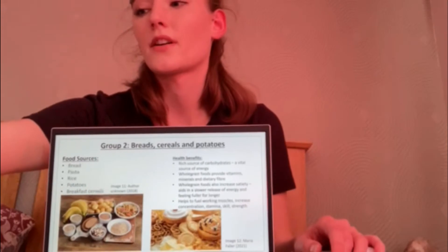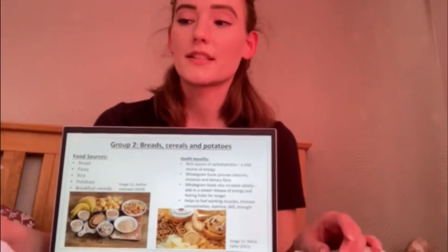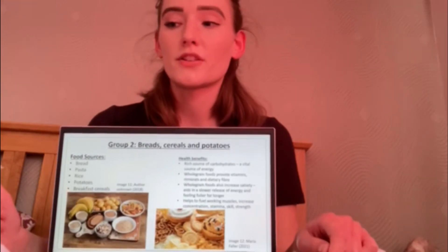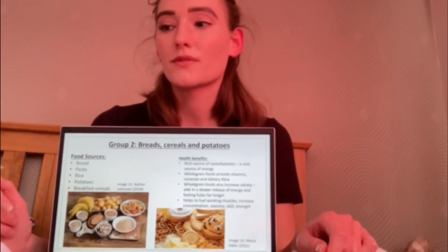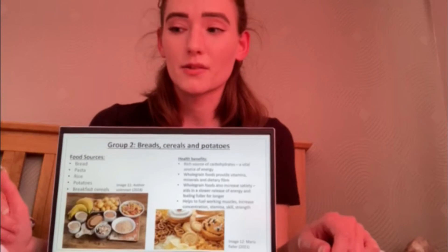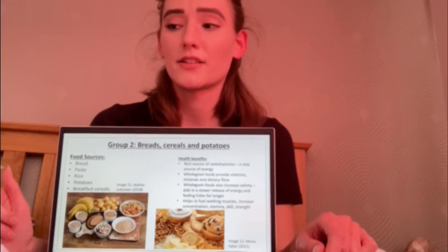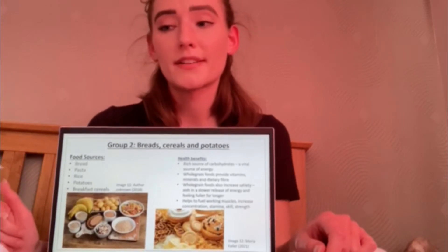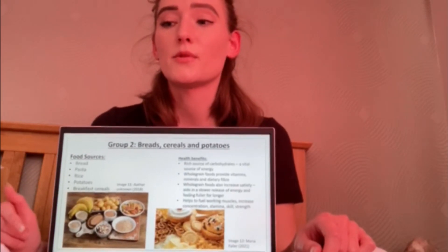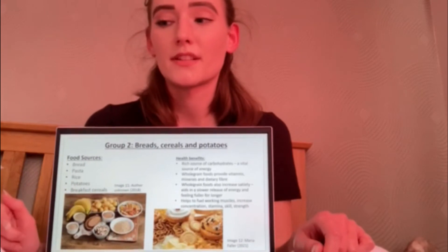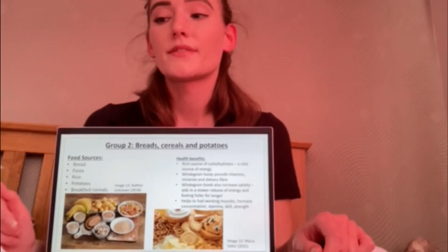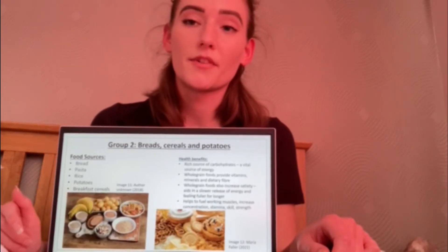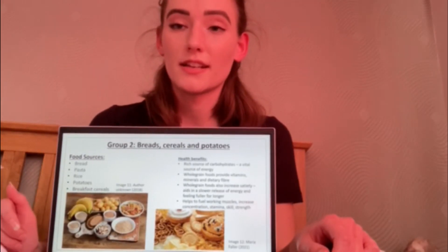In group two we have carbohydrates, which can consist of bread, pasta, rice, potatoes and breakfast cereals. Whole grain versions are typically the healthier option as they provide a better quantity of vitamins, minerals and dietary fibre and support a slower release of energy. Refined carbohydrates have an adverse effect on insulin response and are usually more processed, containing little to no vitamins and a high amount of sugar. Foods in this group are very important as they provide a vital source of energy and should make up roughly a third of our daily diet, included at every meal.